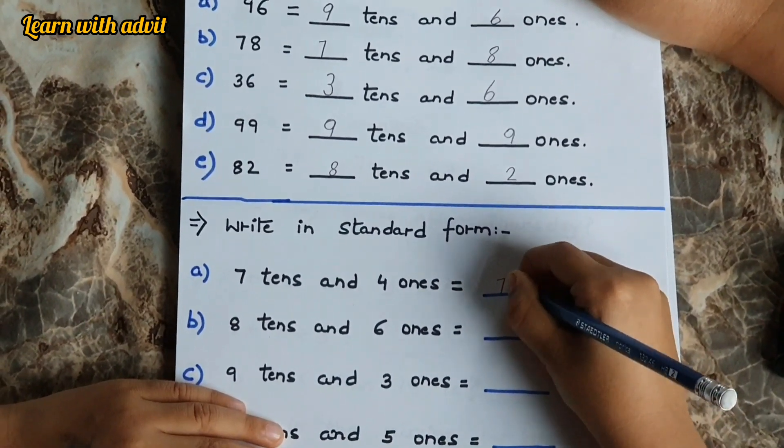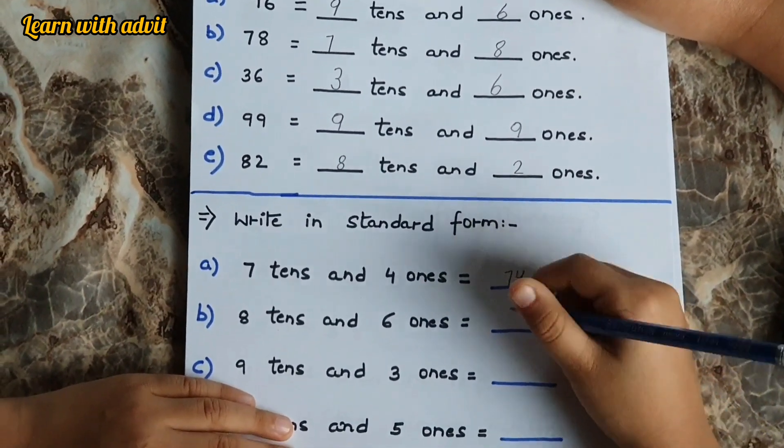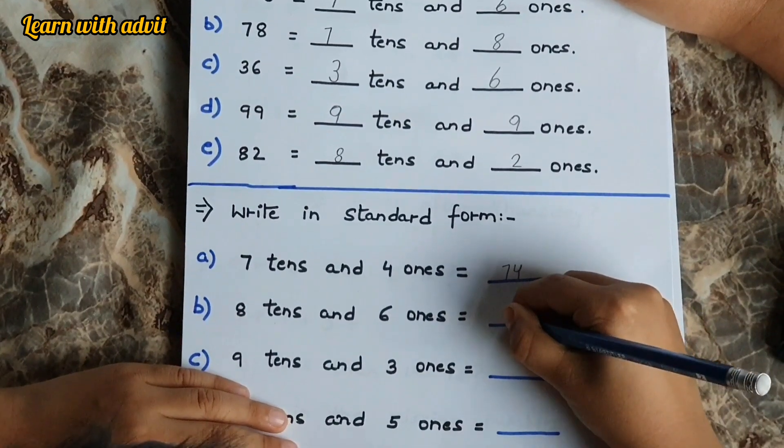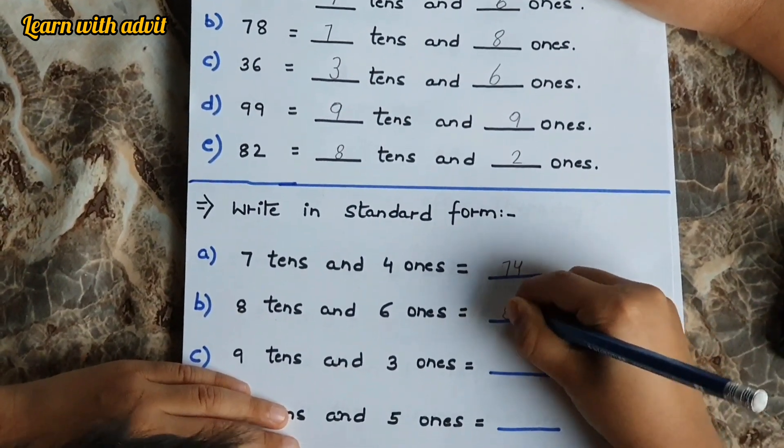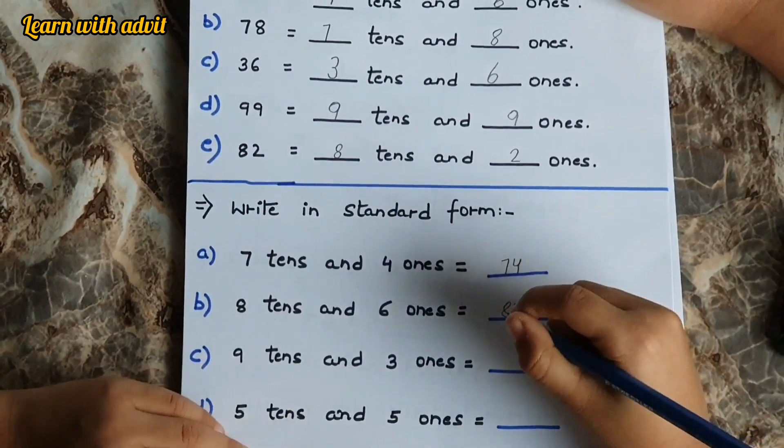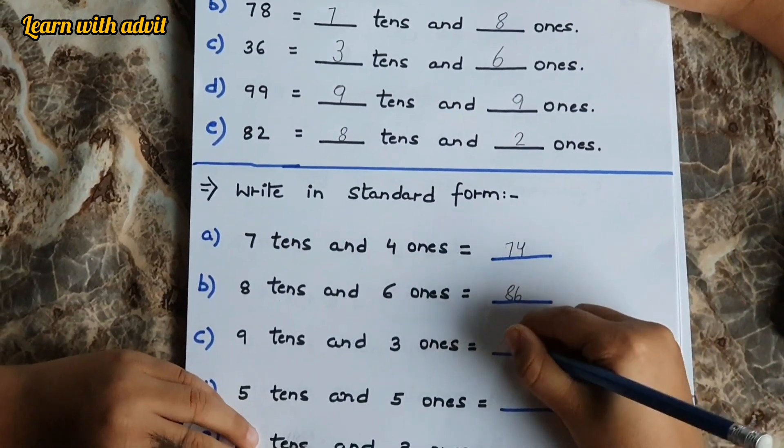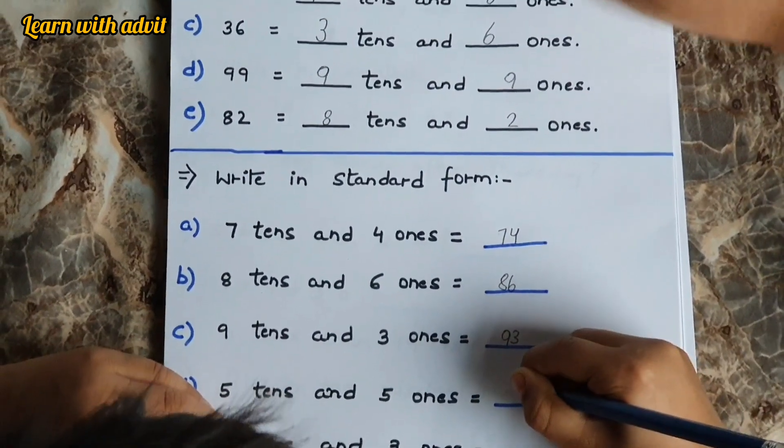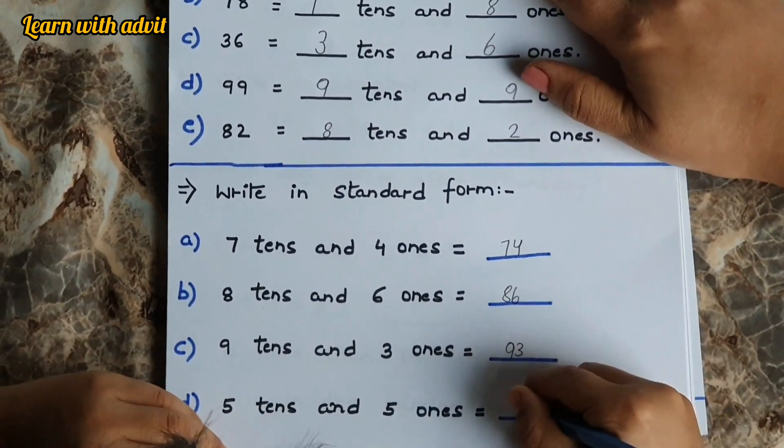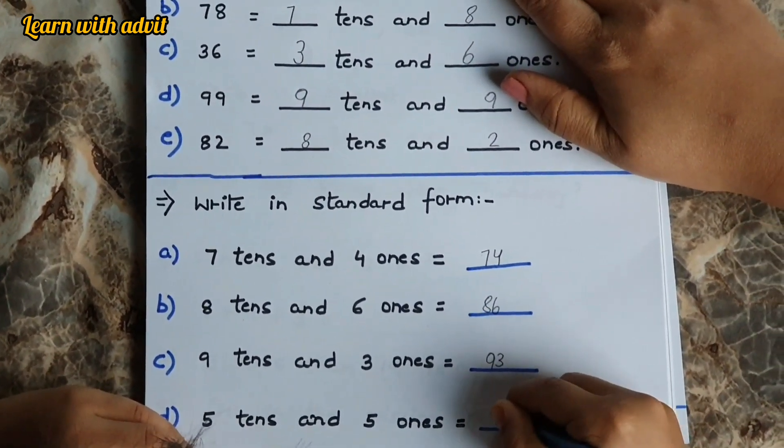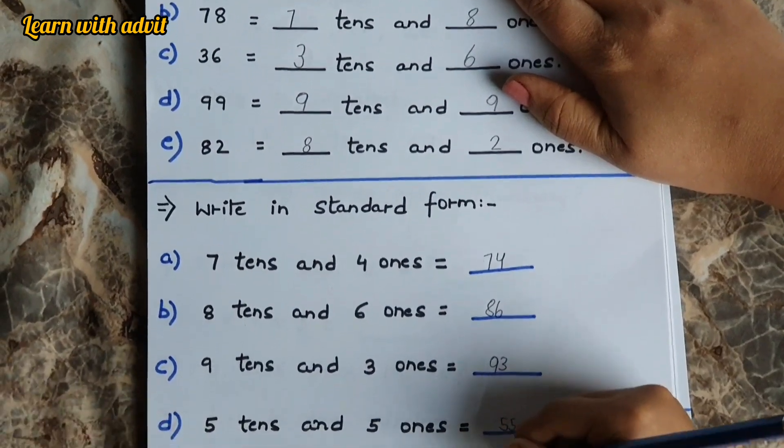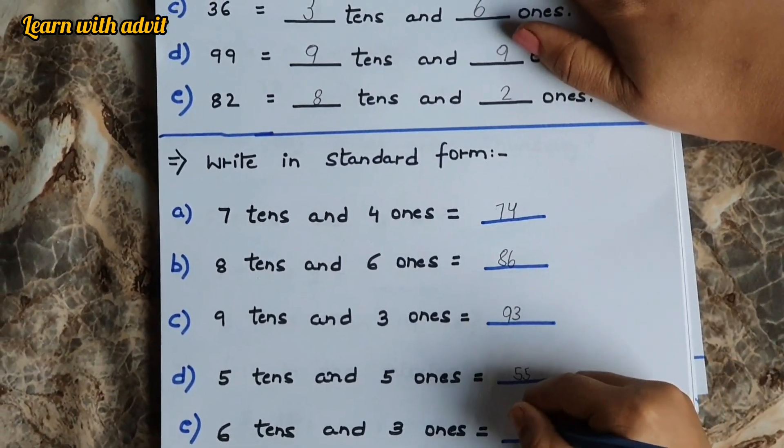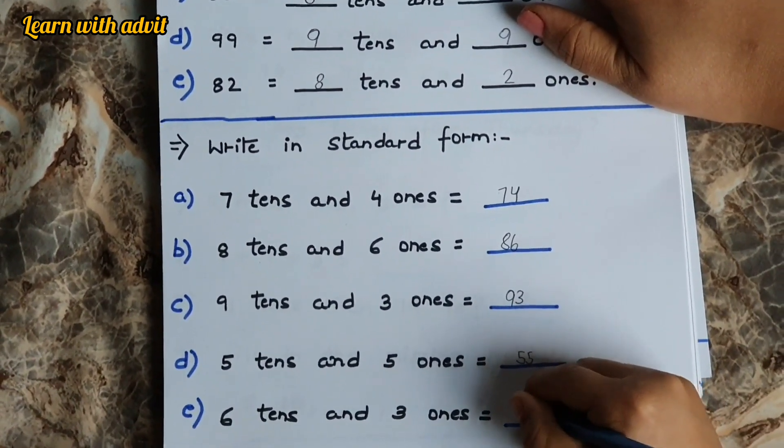Write in standard form. Seven tens and four ones - seventy-four. Eight tens and six ones - eighty-six. Nine tens and three ones - ninety-three. Five tens and five ones - fifty-five. Six tens and three ones - sixty-three.